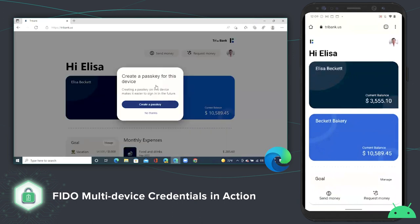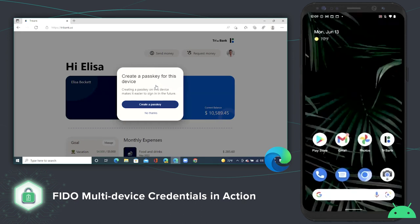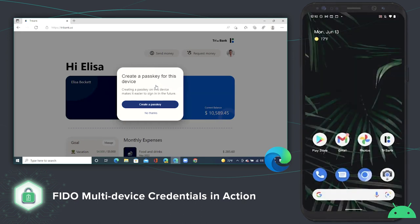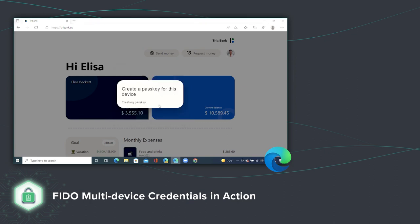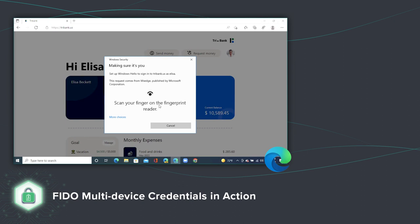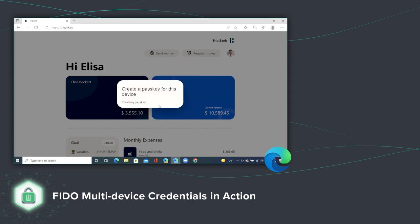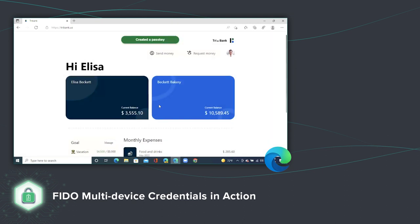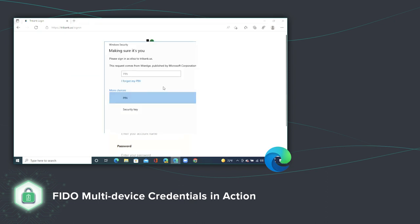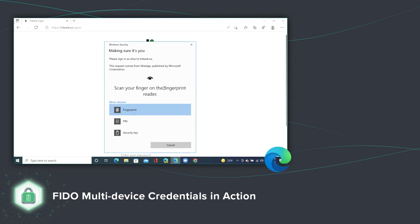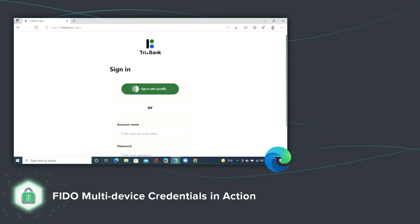At this point, it gives me the option to create a Passkey locally on my Windows machine, so I don't need to keep using my phone to sign in to TryBank every time. So I say create me a Passkey, and Windows Hello kicks in and gives me the option to touch my fingerprint on the sensor to establish the Passkey. A Passkey is now created on my machine directly. So if I sign out of TryBank and come back tomorrow, I simply click sign in with a Passkey, touch my fingerprint to the sensor, and instantly I'm signed in.